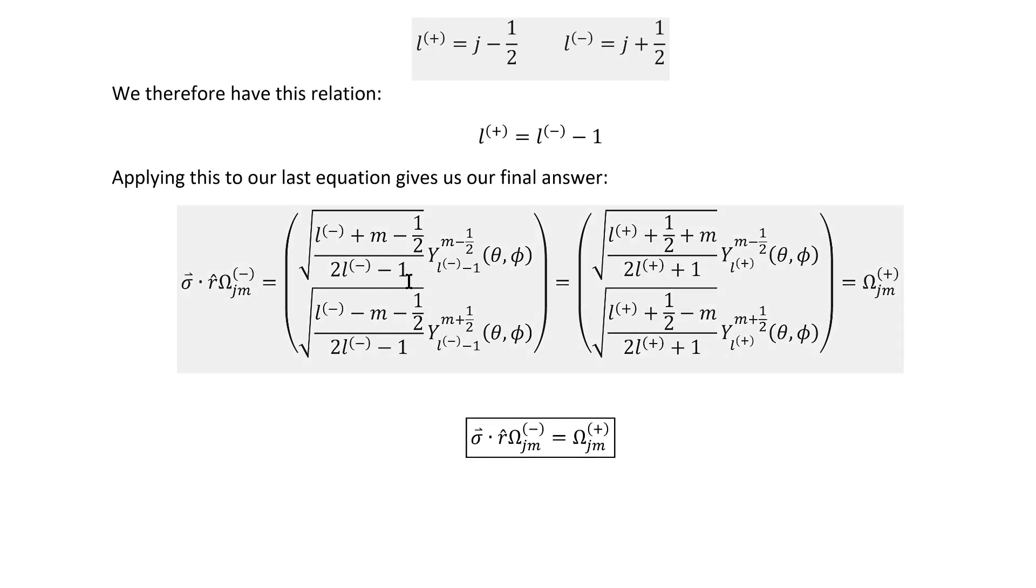So if we explicitly denote which kind of quantum number we're dealing with, the result we have up here, of course, just looks like this one. And if we plug in that relation, we get these results. And this is exactly the expression for the plus-type spinor spherical harmonics in terms of the corresponding L quantum number.